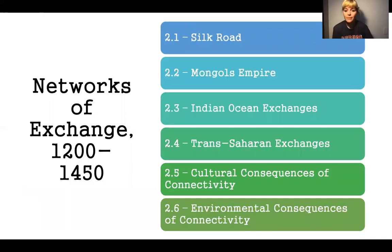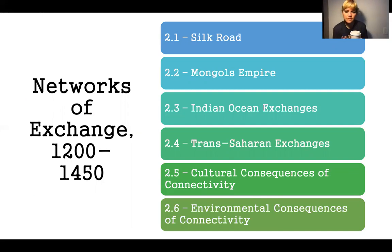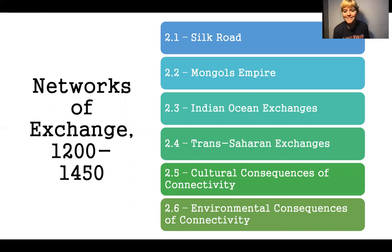So let's talk about networks of exchange. Unit 2 has six different topics, and we're going to go through each one of them. Hopefully you guys remember some of them. I think I didn't give you all that much information on the Silk Road and the Mongols — not because they're not important. They're very, very important. But again, all you really need to know with Period 1 is context. So let's get started.